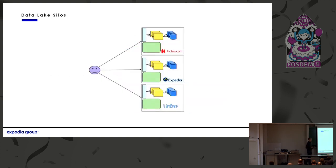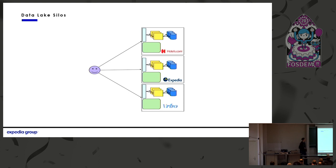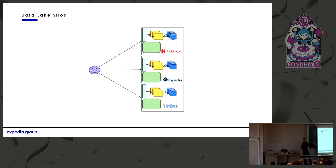An unexpected side effect of the big cloud migration across our entire company was that different business units started moving to the cloud at different speeds — which was good for them — but they started building their own data lakes in their own Amazon accounts, sometimes even in different regions. We basically ended up with data silos. When we were on-premise with one Hadoop cluster and one Hive Metastore, most of the data was in one place and people could easily do joins and queries across all of it. But now with multiple separate data lakes, and Hive never having been designed to federate queries this way, we'd built data silos that our end users wouldn't accept.